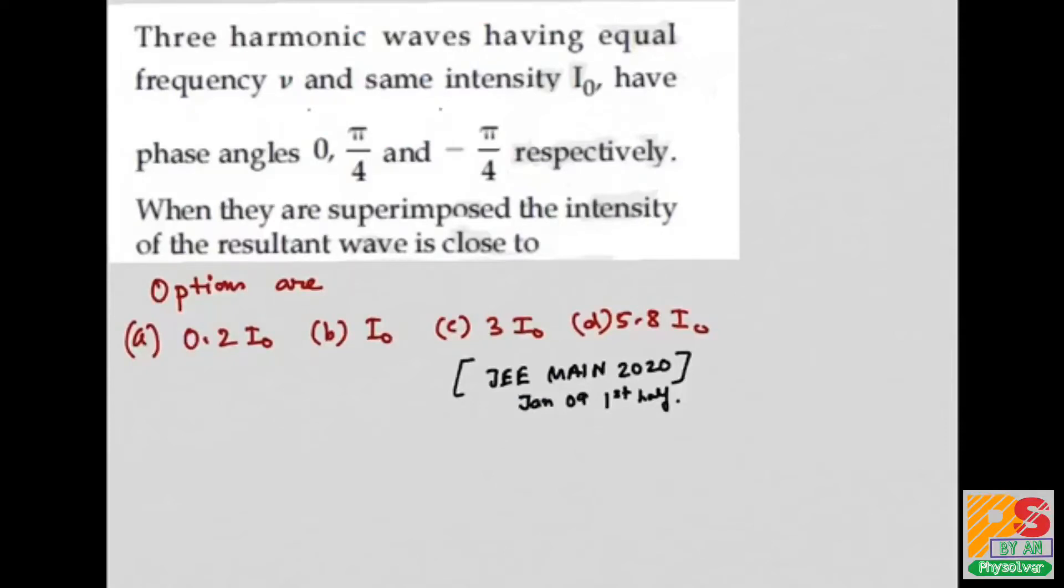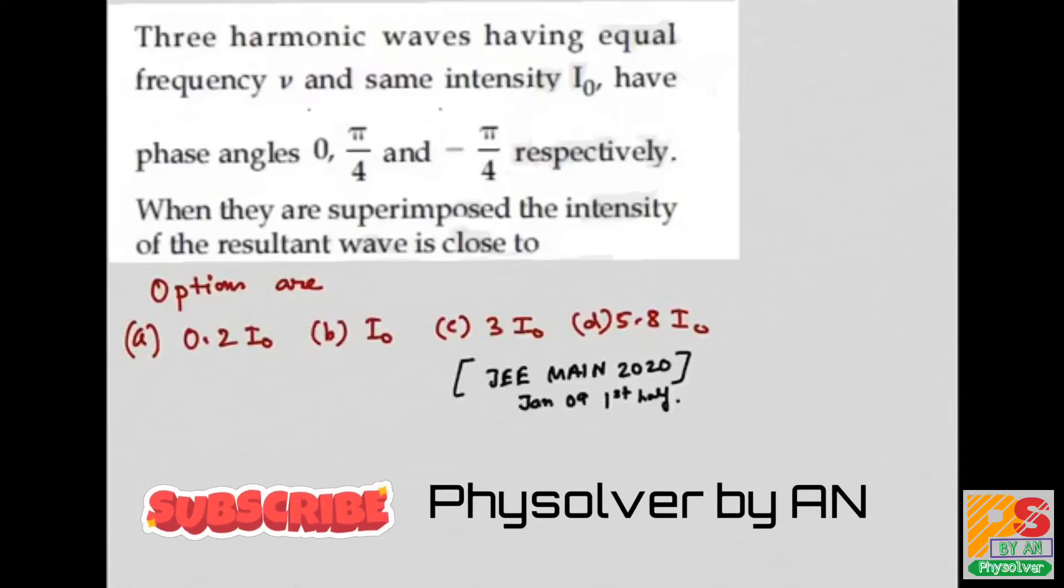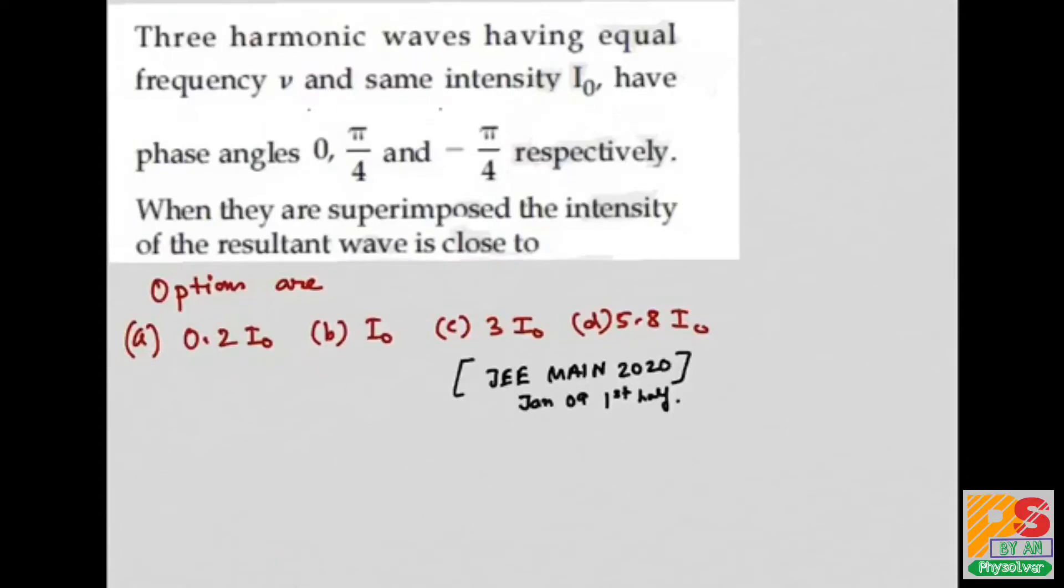Hello students, the question is: three harmonic waves having equal frequency ν and same intensity I₀ have phase angles 0, π/4, and -π/4 respectively. When they are superimposed, the intensity of the resultant wave is close to what?